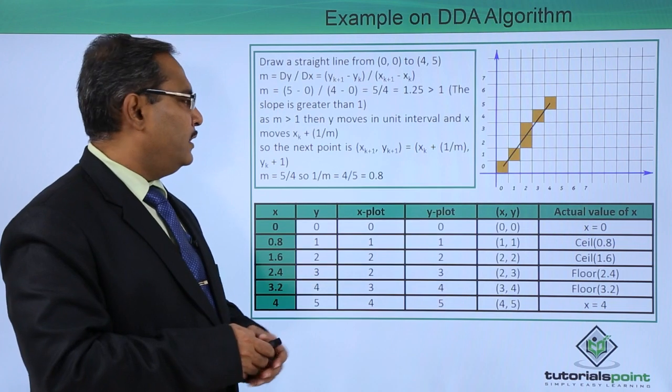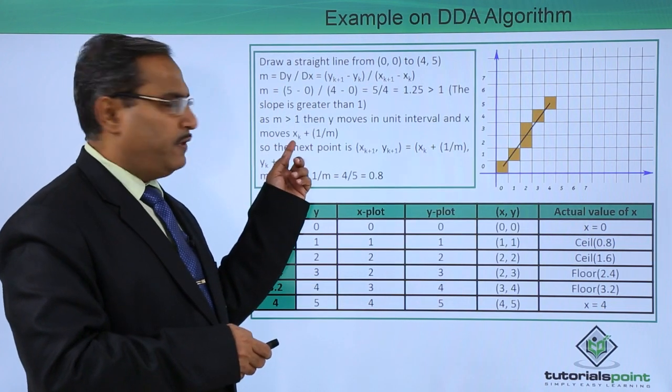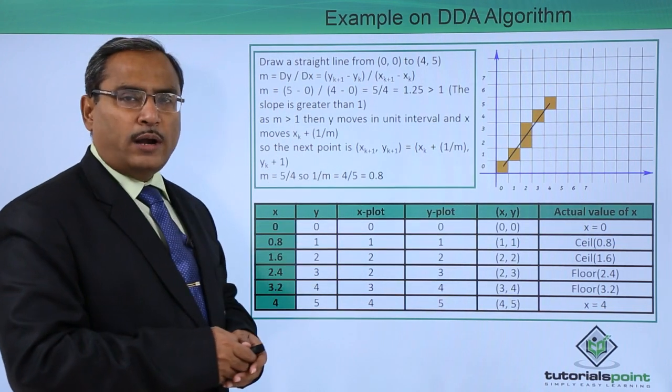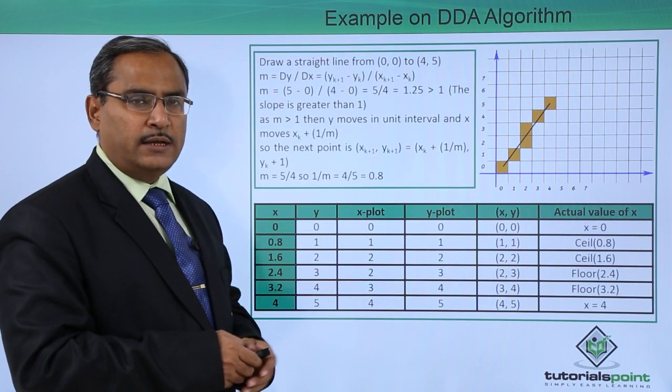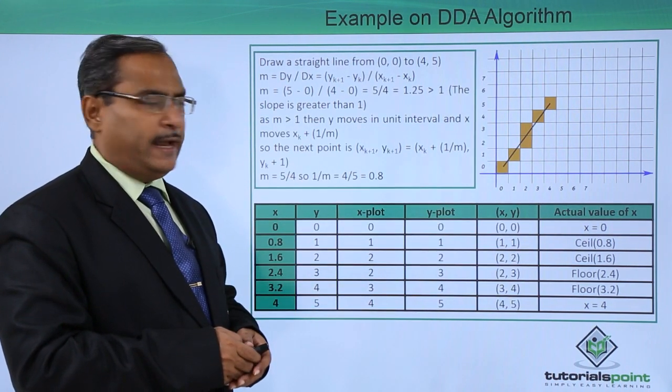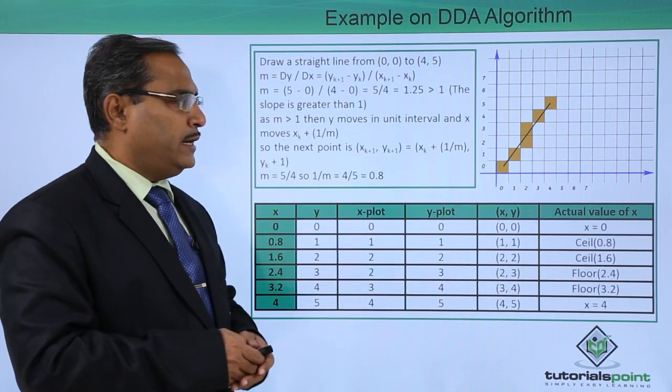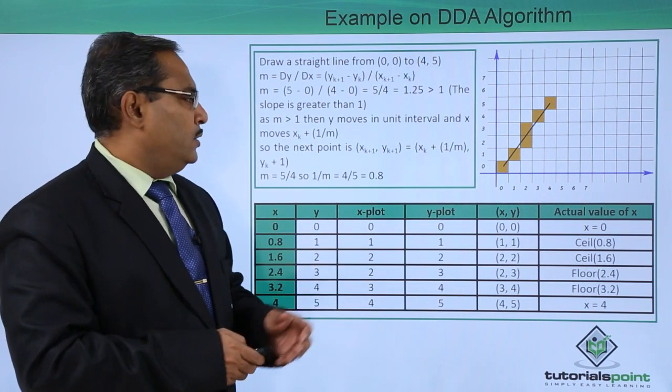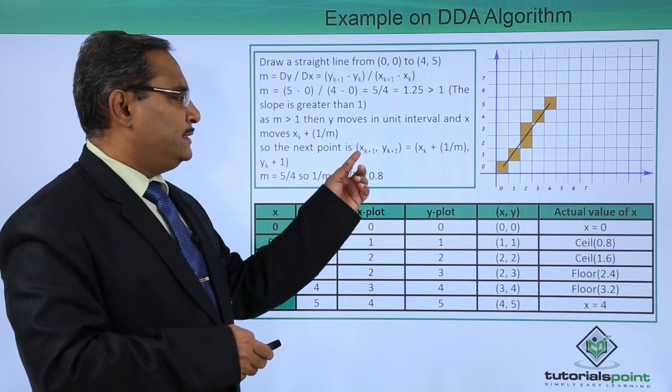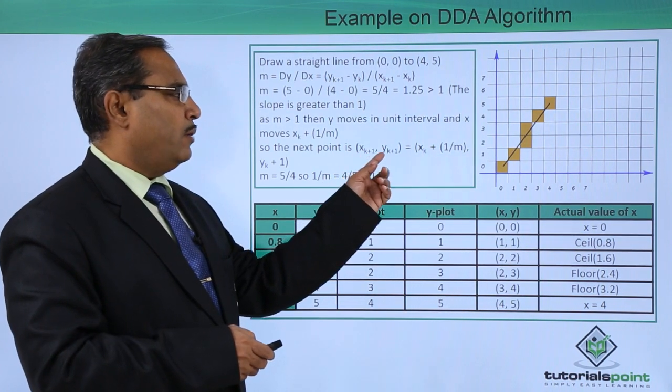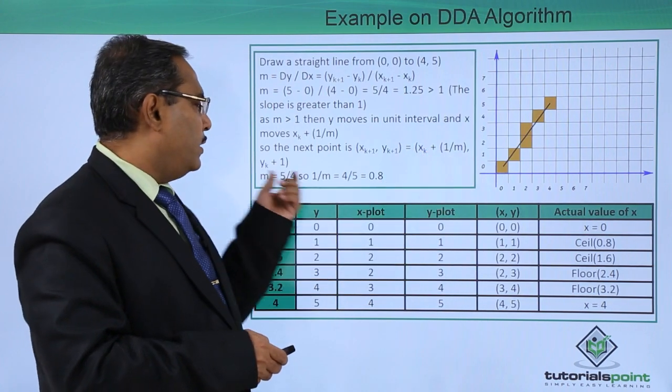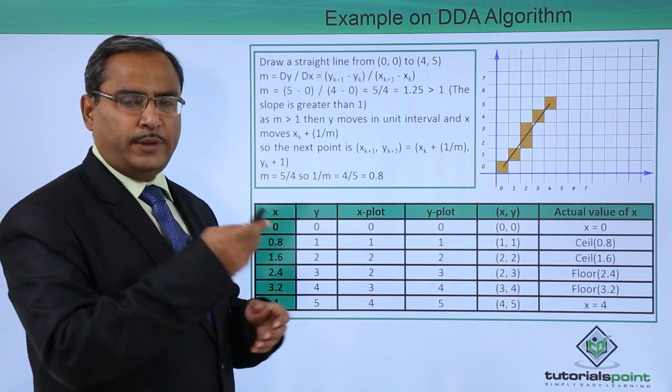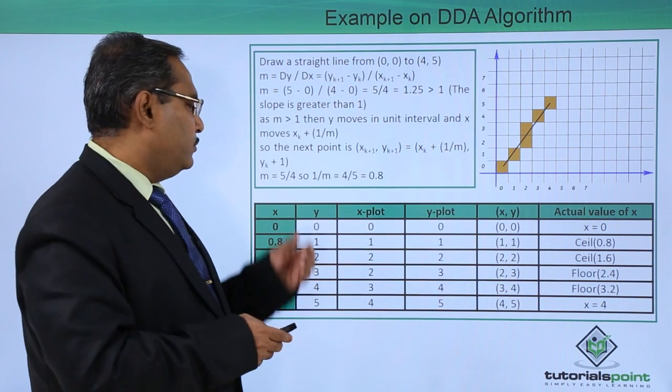Then y moves in the unit interval and x moves with the value that is x_k + 1/m. The respective increment in x, and y will be incremented by 1 only. The next point is x_k+1, y_k+1 will be x_k + 1/m, y_k + 1. In this way, the next values are going to get calculated.